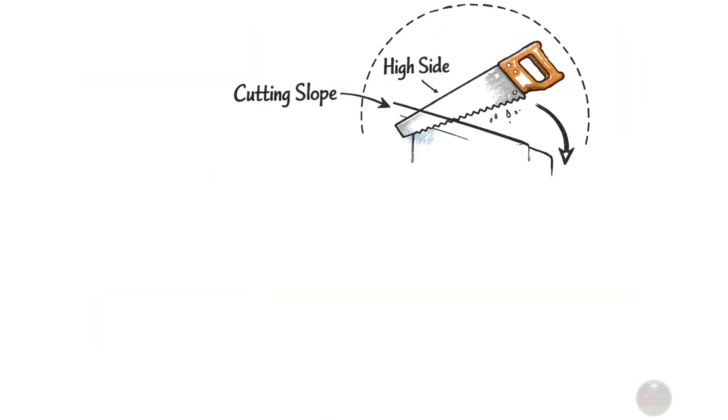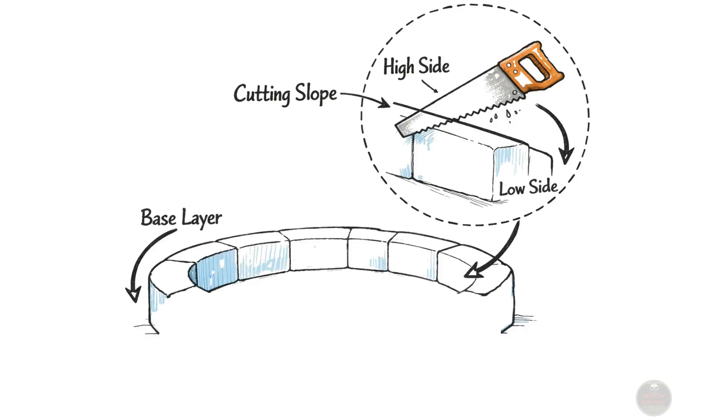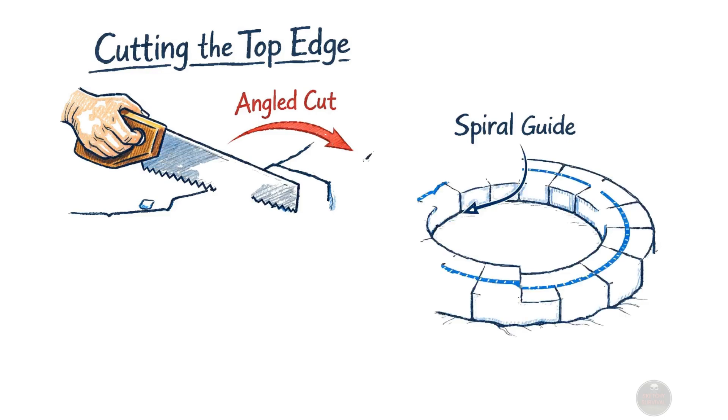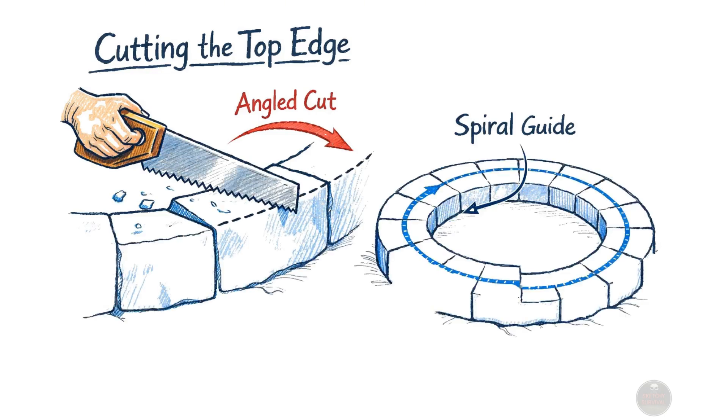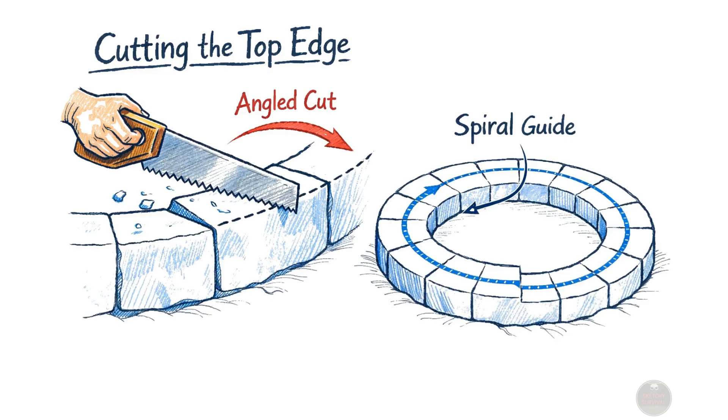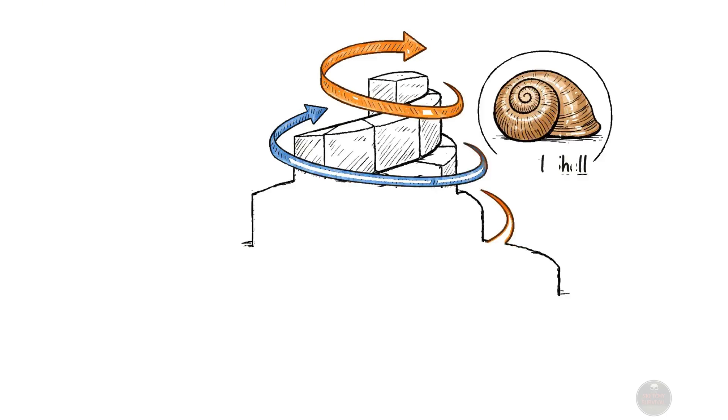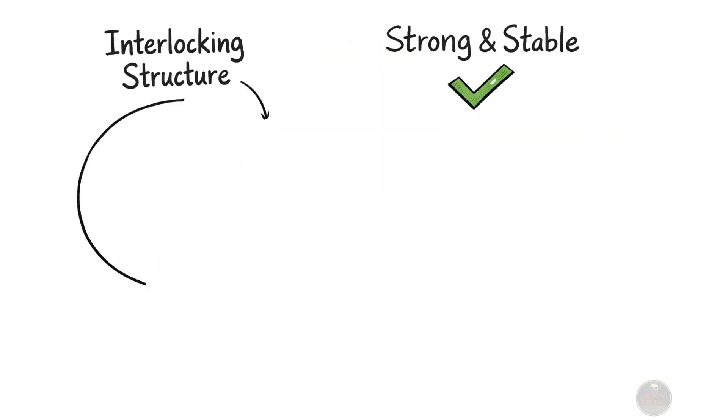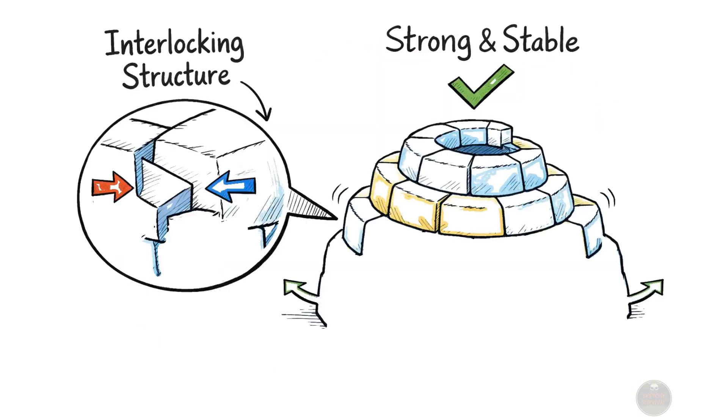After laying the first foundational layer of blocks in a perfect circle, you then meticulously cut a gentle, continuous slope into the top edge of these initial blocks, establishing the crucial spiral for subsequent layers. This angled cut allows the subsequent layers to spiral upward seamlessly, much like the elegant shell of a snail. This unique design creates a continuous interlocking structure, providing immense stability and preventing any potential inward collapse.